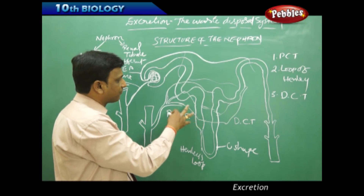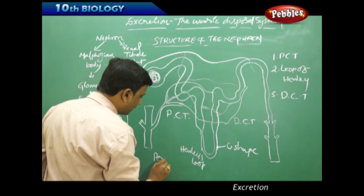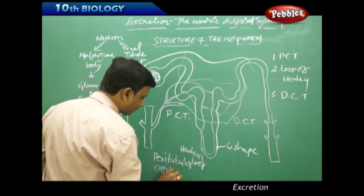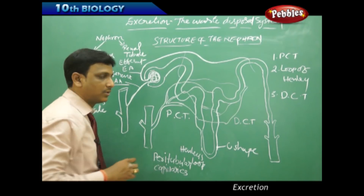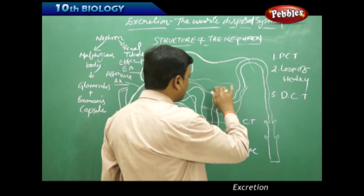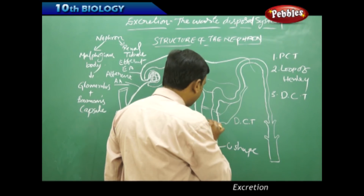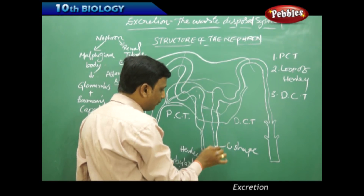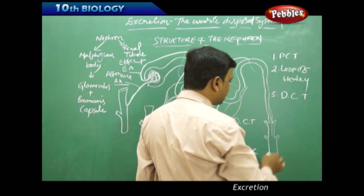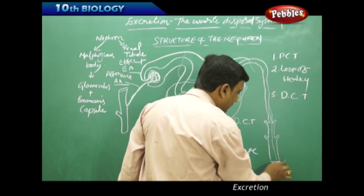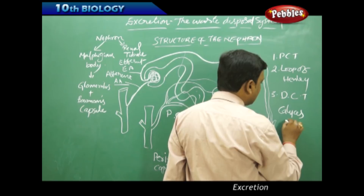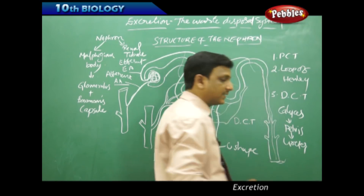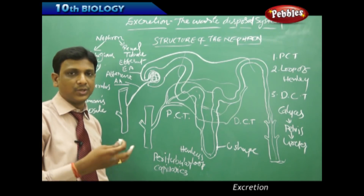The network of capillaries surrounding the renal tubule is called the peritubular capillaries. These capillaries form a bridge between the renal vein and renal artery and help in the exchange of materials, extra water, and ions. The filtrate travels from PCT to loop of Henle to DCT, and finally connects to the calyces, then the pelvis, and on to the ureter.